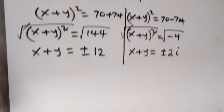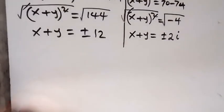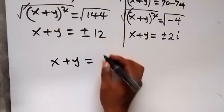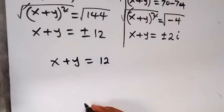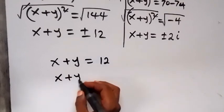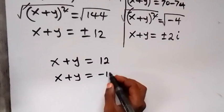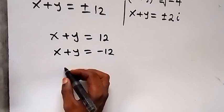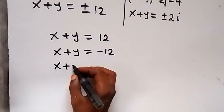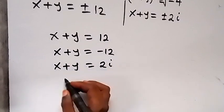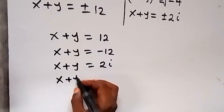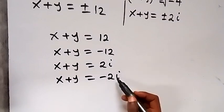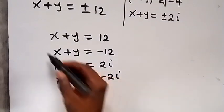So we have four possible values for x plus y. We have x plus y equals 12, x plus y equals minus 12, x plus y equals 2i, and x plus y equals minus 2i. We have two real solutions and two complex solutions.